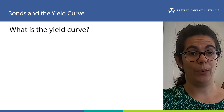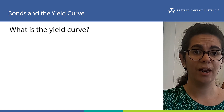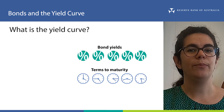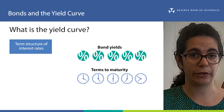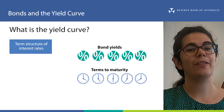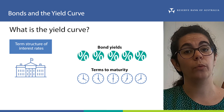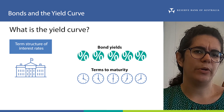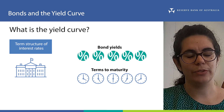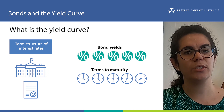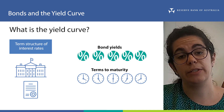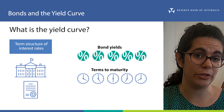Now that we understand what a bond yield is, we can learn about the yield curve. A yield curve shows the relationship between bond yields and their terms to maturity — sometimes called the term structure of interest rates. The yield curve we look at most is the government yield curve, which we sometimes call the risk-free yield curve. Governments are always expected to pay back their borrowing, and government bonds are very common, so the secondary market for them is very active and owners can sell them to other investors easily.